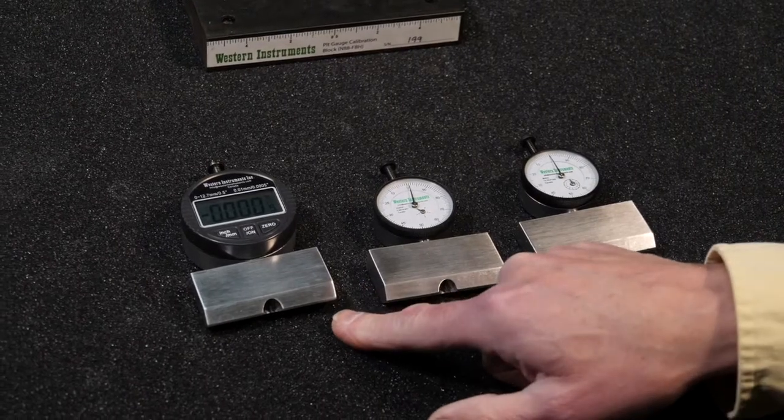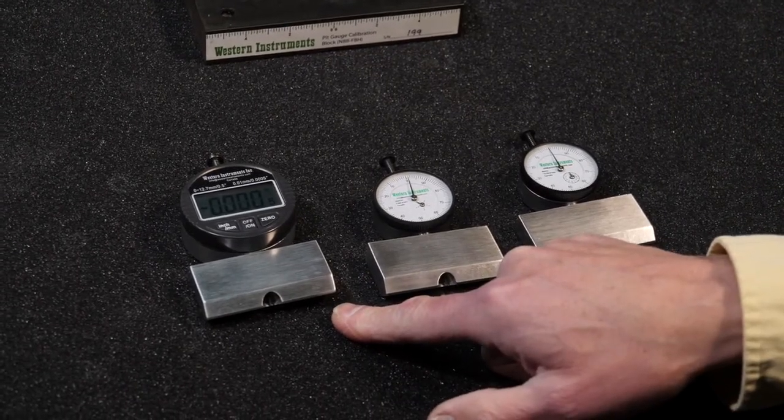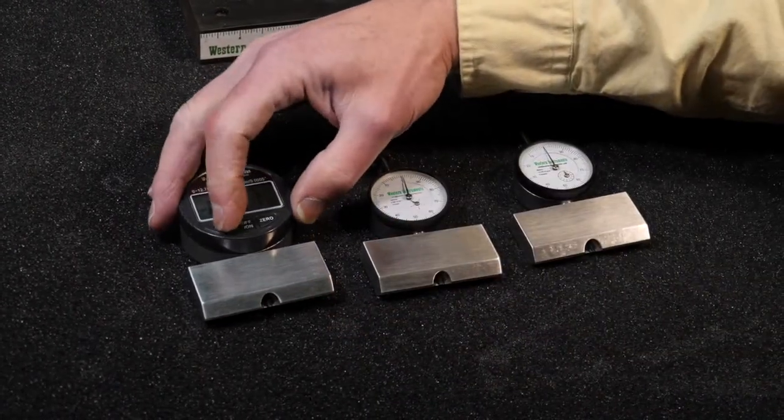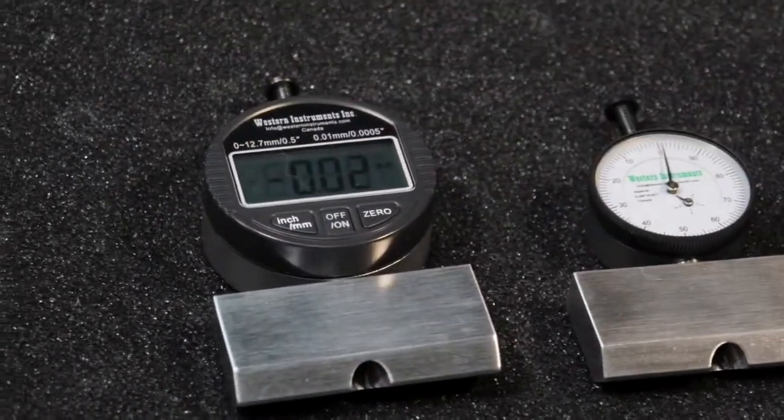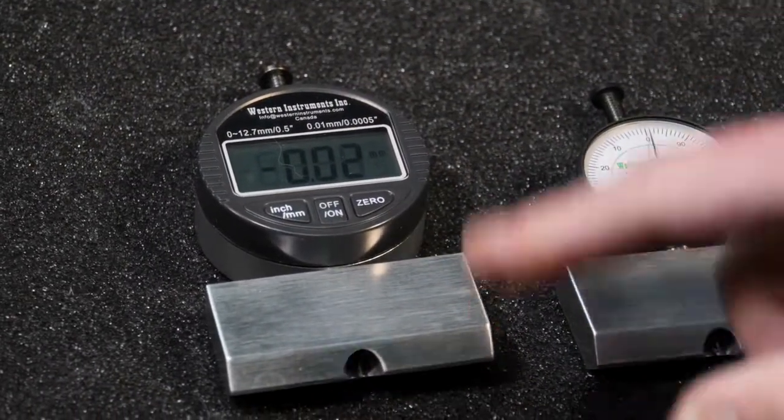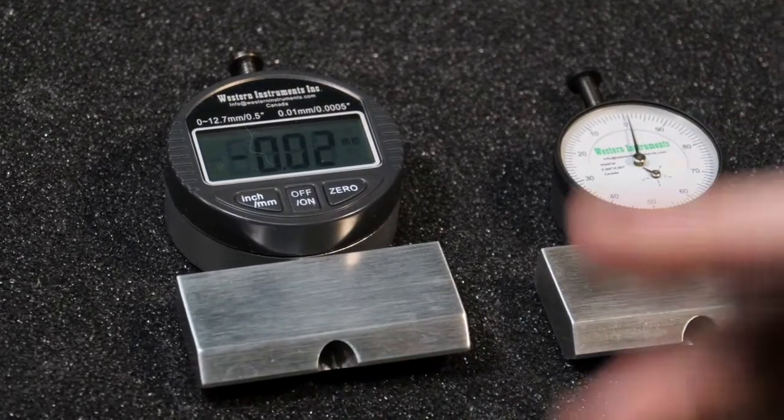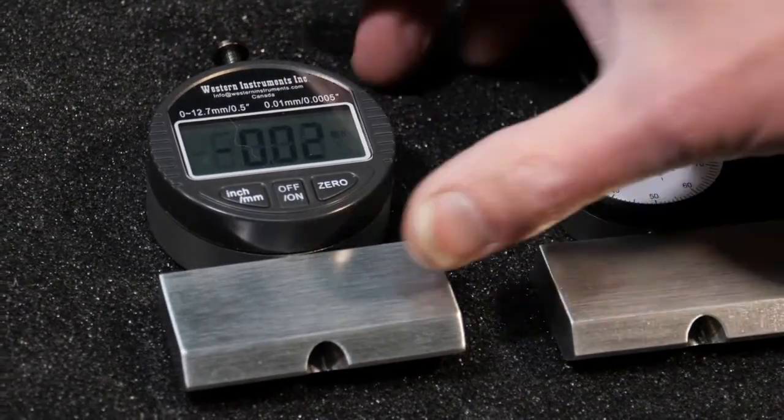The digital resolves to one one-thousandth of an inch, or while it's in metric mode, one one-hundredth of a millimeter. Range is about a half an inch, or about 13 millimeters.